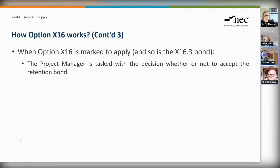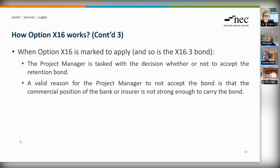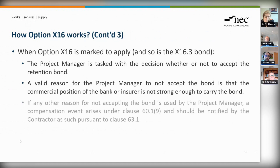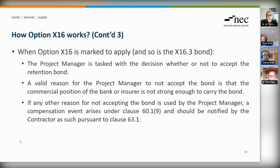In NEC4, X16 allows for a retention bond. The project manager has a decision as to whether or not to accept a retention bond if X16 is stated to apply. A valid reason for not accepting a bond is essentially that the bondsman or bank or insurer is not strong enough — and that is essentially the only reason they can provide for refusing a bond without it being a compensation event. If a bond is rejected for any other reason, that will be a compensation event.